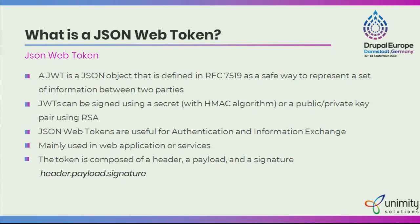JWT is mainly used in web services. Before JWT, we were also using tokens to validate web services — even simple tokens without full authentication. Most solutions now use JWT for web services. The token is composed of three parts: header, payload, and signature. The header contains two parts: the type of token (JWT) and the algorithm used for signing, such as HS256.